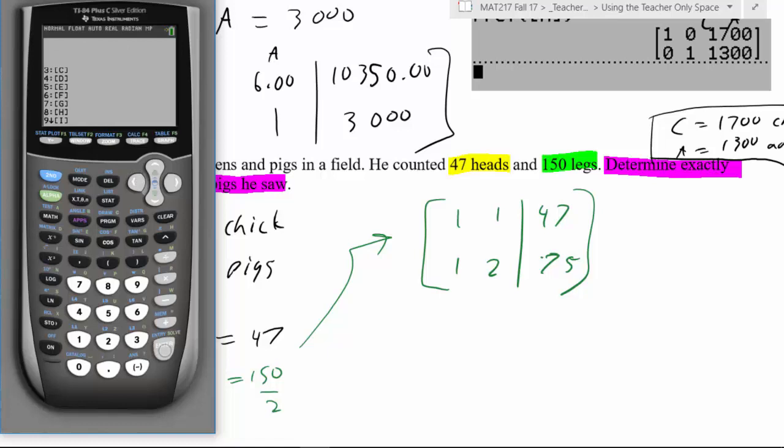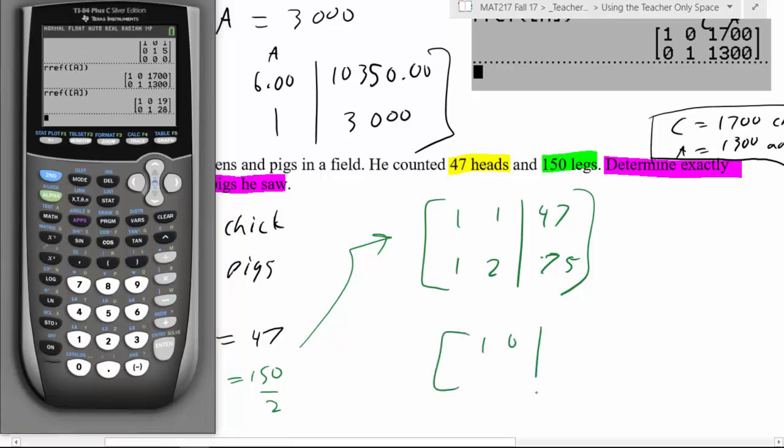We're going to go over here to edit, and it's a two by three once again. One, one, forty-seven, and one, two, seventy-five. Alright, I'm just going to hit enter, so it re-does to produce reduced row echelon form, and what do we get? One, zero, nineteen, zero, one, twenty-eight.